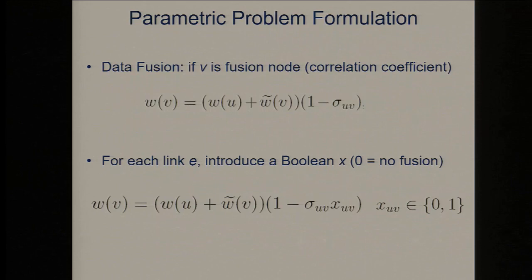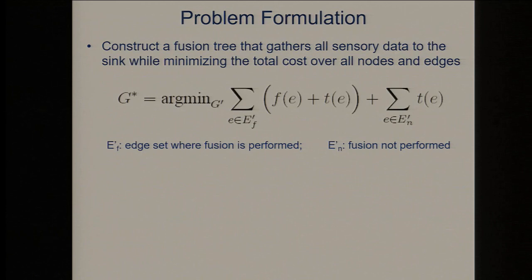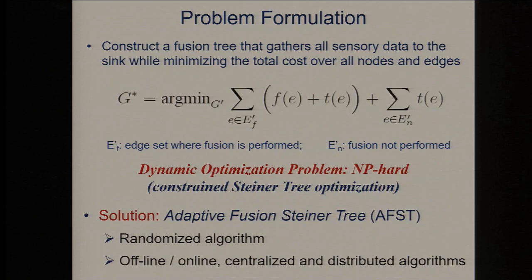We have developed many randomized algorithms — online, offline, centralized, and distributed — and we call these the Adaptive Fusion China Tree Problem algorithms. A key observation: if fusion is not beneficial after a certain point from any source to sink path, then from that point onwards it will not be beneficial for the rest of the path. So you do fusion-driven routing up to that point, then switch to simple shortest path routing. Our randomized algorithm also gives clustering of the network as a byproduct — partitioning sensors into different clusters based on where fusion happens. We can compute the approximation ratio of 1.5 times log of the network size.